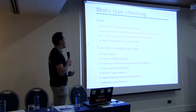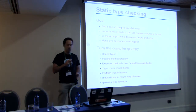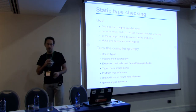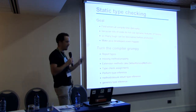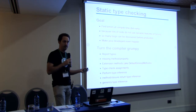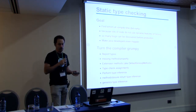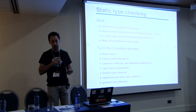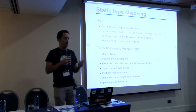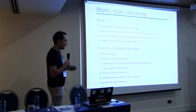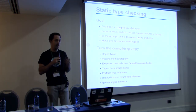Today we are going to talk again about static type checking. Yesterday we saw that in Groovy 2 we introduced type checking which is optional, but we also saw that there were limitations to type checking — limitations because the Groovy language is a dynamic language.